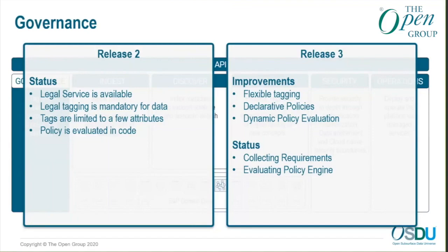The improvements we want to make in R3 are to improve the flexibility of the tagging so you can bring in additional attributes relevant to the country you're operating in, corporate policies, and so on. This also means moving from hardcoded policies to declarative policies and dynamic policy evaluation by the services. We're still finalizing the requirements and have looked at a couple of policy engines. The next step is an endorsement from the EA team to kick off what will become an incubator project.